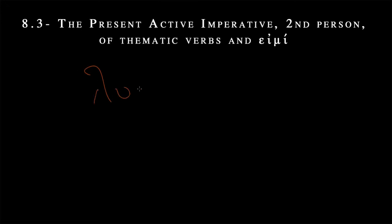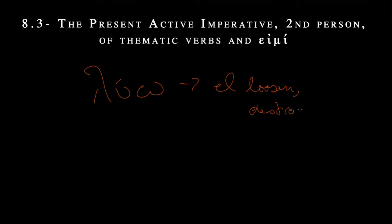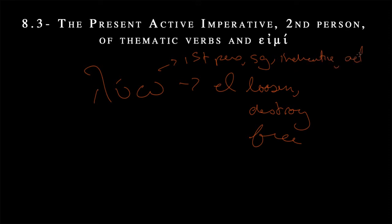So let's put our favorite verb, luo — favorite because it's short. This means 'I loosen,' 'I destroy,' 'I break down.' However, it's going to be 'free.' So this is first person singular indicative active. That's first person — 'I,' singular — it's not 'we.' Indicative — this is a statement of fact. Active — it's not passive or middle. And then it's also present tense.